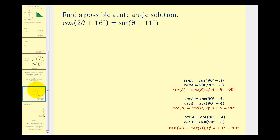Let's take a look at our first example. We want to find a possible acute angle solution to cosine of the quantity two theta plus 16 degrees equals sine of the quantity theta plus 11 degrees.